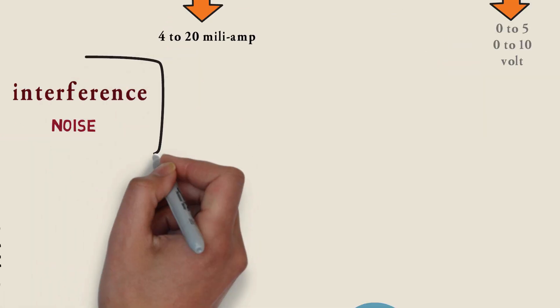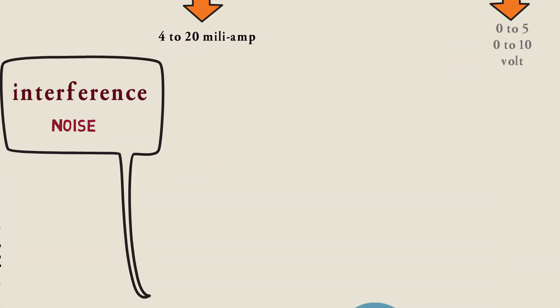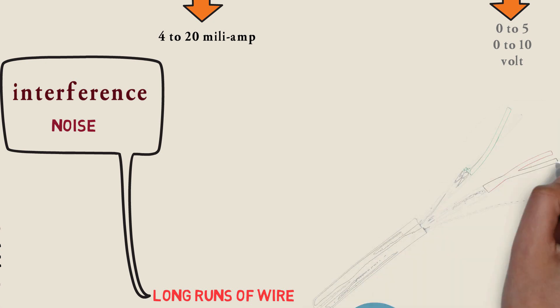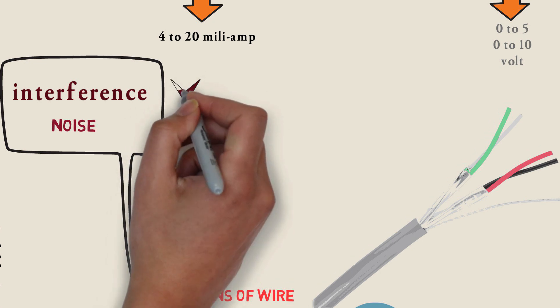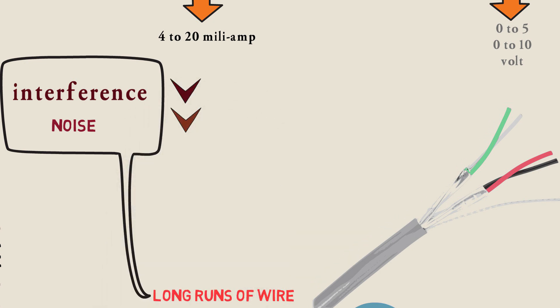Due to interference and noise, which can affect significantly long runs of wire, we want to make sure with analog signals that we use a twisted and shielded pair. This will help us reduce the interference and the noise with analog signals.